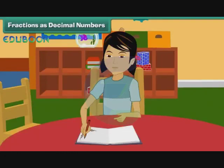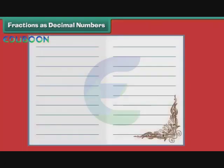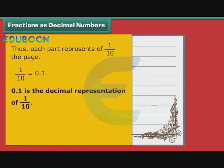Fractions as Decimal Numbers. Arpita is busy decorating the pages of her personal diary. The lines on a page of her diary divide the page into 10 equal parts. Thus, each part represents 1 by 10 of the page. 1 by 10 can also be written as 0.1. Therefore, we can say that 0.1 is the decimal representation of 1 by 10.